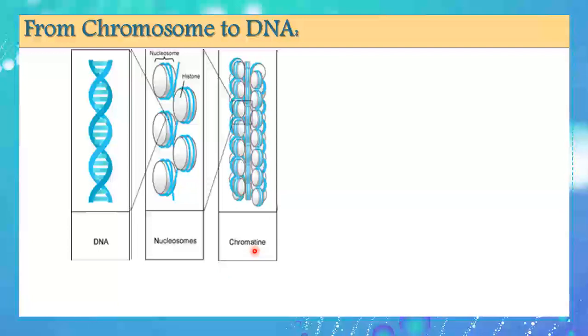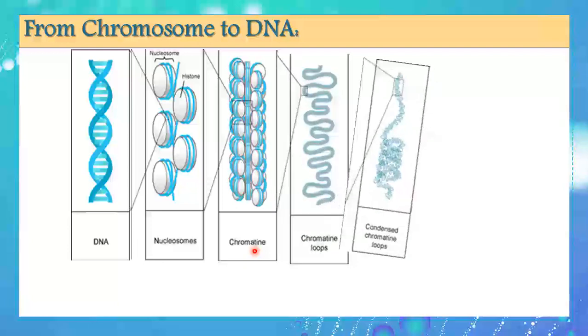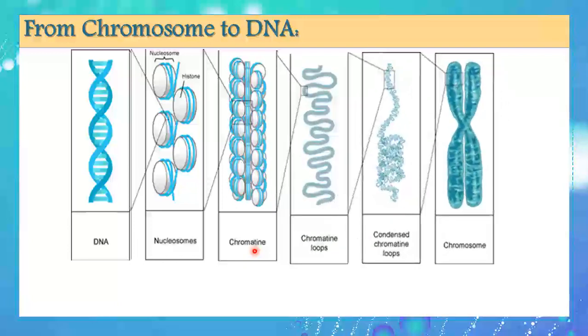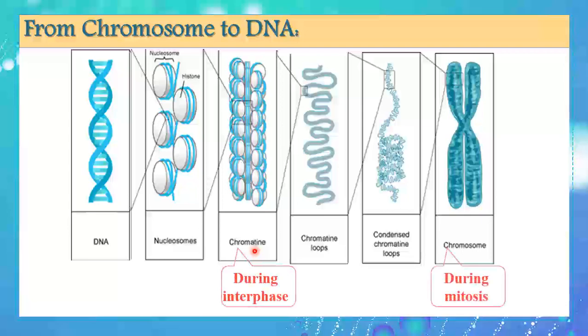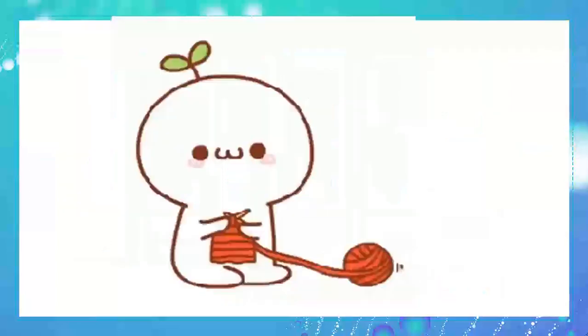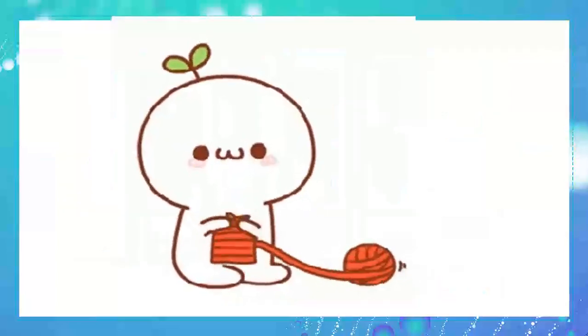This chromatin is then wrapped and wrapped again in order to form the chromosome. Chromatin is found during interphase, while chromosomes are found during mitosis or cell division. The process of chromatin becoming a chromosome is called condensation. In short, two meters of DNA become a 0.2-micrometer chromosome with the help of histone protein — just like packing a long thread of wool into a shorter scarf.